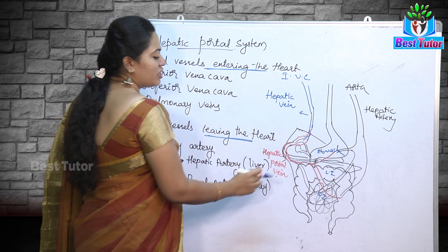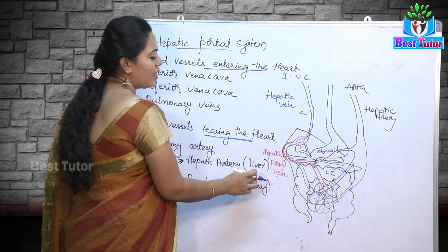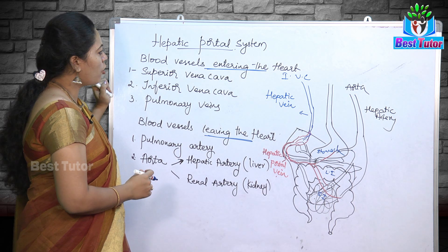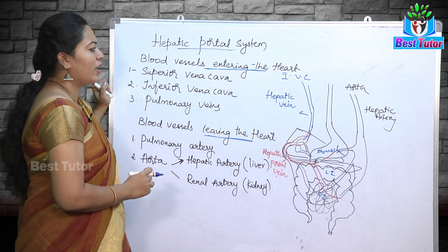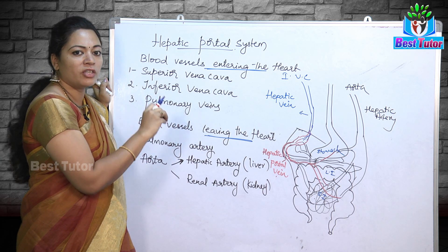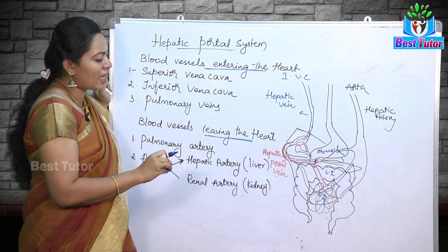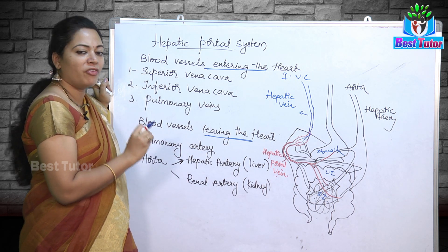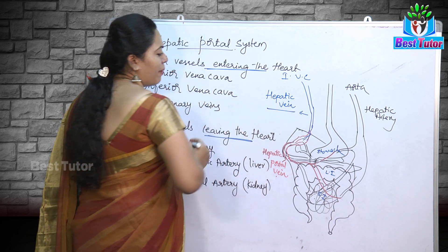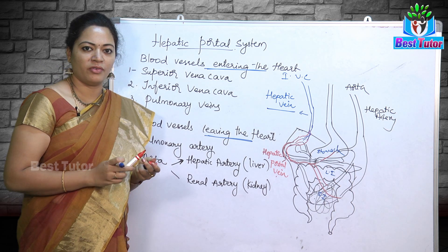This is what we are discussing in the hepatic portal system. Unlike other blood vessels which directly go to the respective organ and collect carbon dioxide and come out, here the hepatic artery further divides to form capillaries in the respective digestive organs, unites to form the hepatic portal vein, enters the liver, and from the liver forms the hepatic vein which enters the vena cava. The blood vessel which starts with capillaries and ends with capillaries is known as the hepatic portal vein. This is about the hepatic portal system. Thank you for watching the video.